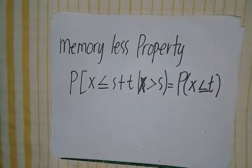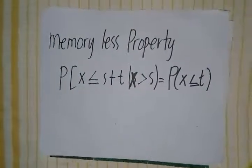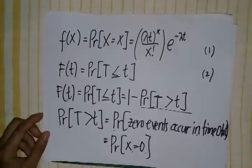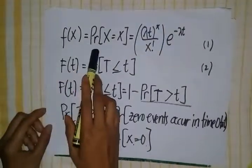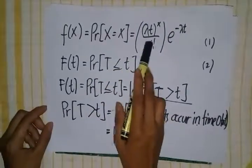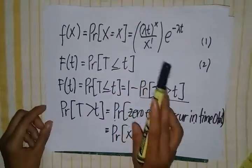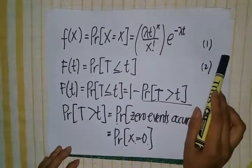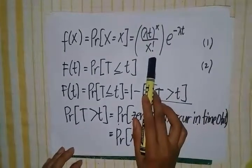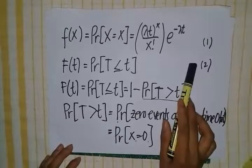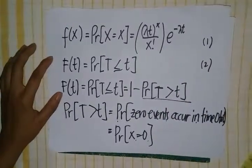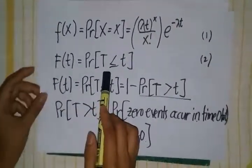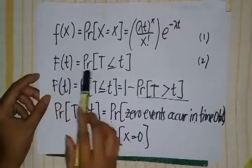The memoryless property, as well as the PDF and CDF of both distributions, are used to identify the relationship between them. We have f(x) = P(X = x) = (λt)^x / x! · e^(−λt), the Poisson probability function, where λ is the mean rate of arrivals and t is the period of time. By defining t as the time of an event and applying the memoryless property — substituting x by t — we arrive at a new equation.